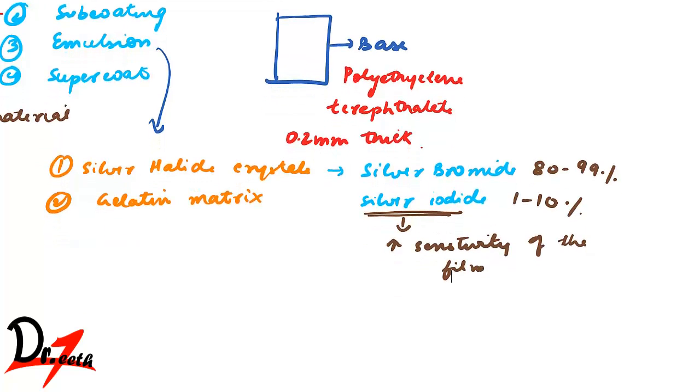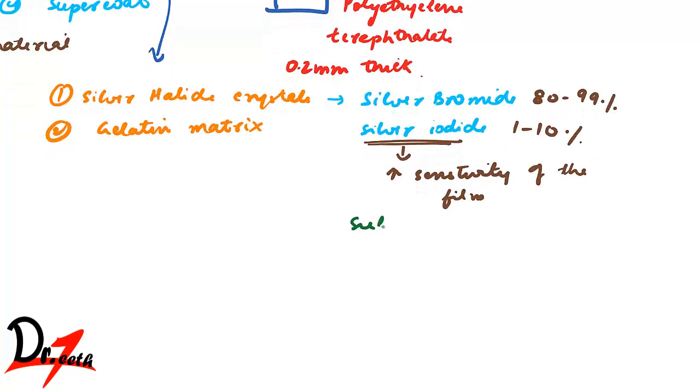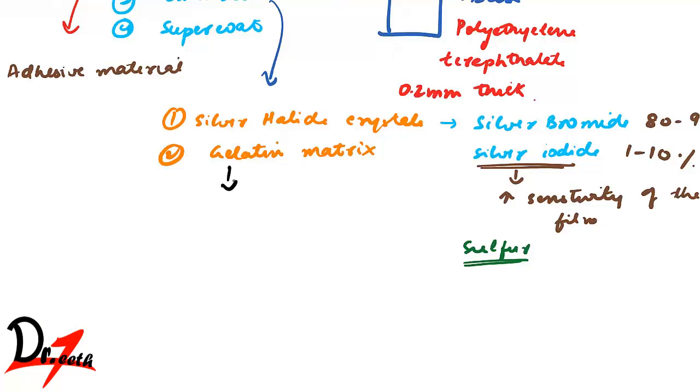These silver halide crystals, they are photosensitive. So when they are exposed, they will react to it. They will respond to it. The gelatin matrix supports the halide crystals. So actually our halide crystals are suspended in the gelatin matrix.